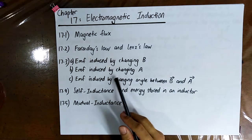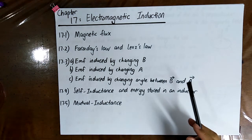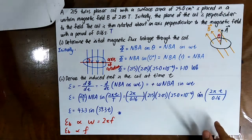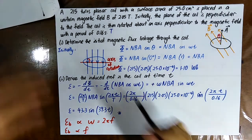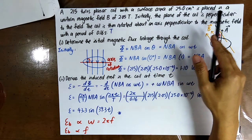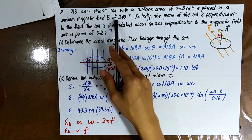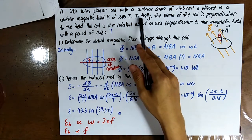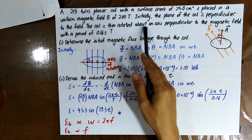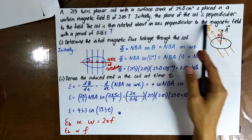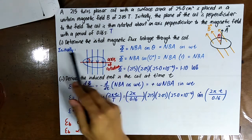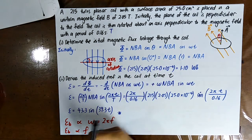Normally, how do we change the angle between B and A? We will rotate the coil. For example, a 215-turn planar coil with a surface area of 25 cm² is placed in a uniform magnetic field B of 2.05 Tesla. Initially, the plane of the coil is perpendicular to the field. The coil is then rotated about an axis perpendicular to the magnetic field with a period of 0.16 seconds. Determine the initial magnetic flux linkage with the coil.